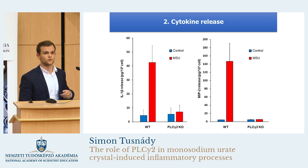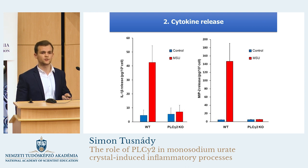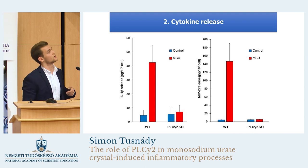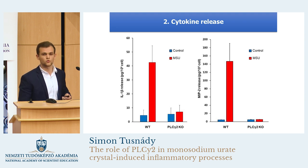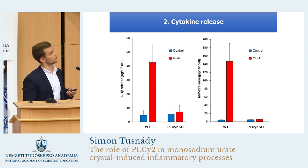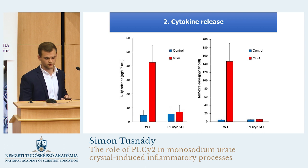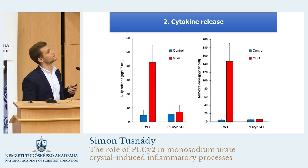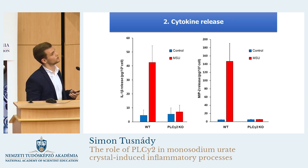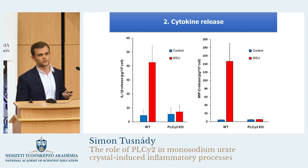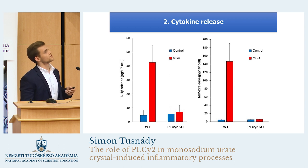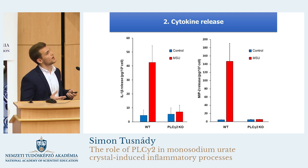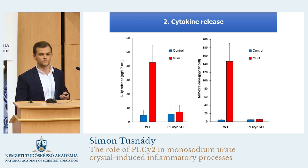We examined the cytokine release of the cells. For this, we placed the cells in the presence of the urate crystals for six hours, and from cell-free supernatant we determined the amount of the released IL-1 beta. This cytokine is known to have a significant role in gouty inflammation, so its level is very informative for us. As you can see, in the case of the wild-type neutrophils, the urate crystals induced a significant IL-1 beta release. But in the PLC gamma 2-deficient neutrophils, the amount of released IL-1 beta was dramatically reduced. We also examined the MIP-2 release of the cells. This is a chemokine which has a great impact on neutrophil migration, and we found a similarly significant decrease in the PLC gamma 2-deficient neutrophils.